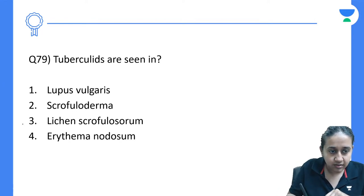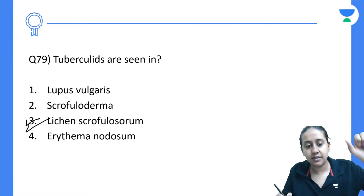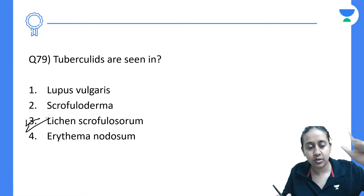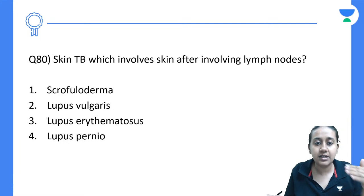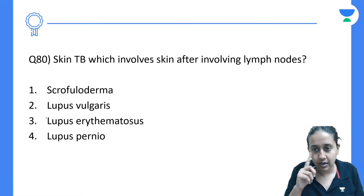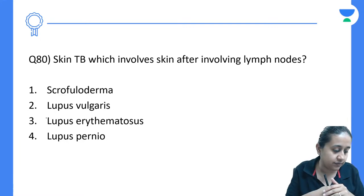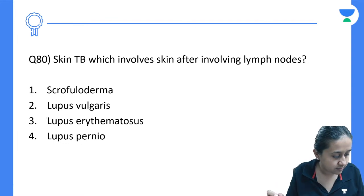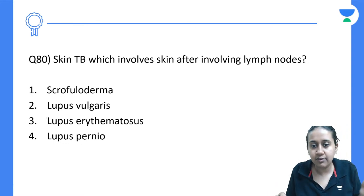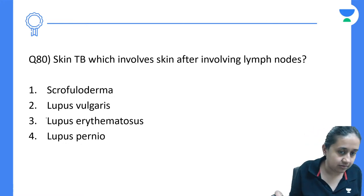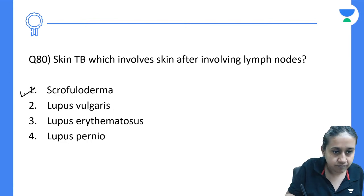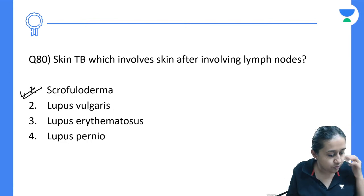Tuberculate is again a hypersensitivity reaction with three types: lichen scrofulosorum, papulonecrotic, and erythema induratum. Which skin TB involves the skin after involving the lymph node? The correct answer is scrofuloderma.